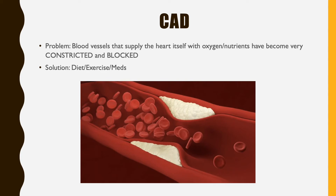For coronary artery disease, we tell patients the same things: diet, exercise, and medications. We want to improve their heart health diet, getting some of those fats decreased, and making sure they eat a low sodium diet so they're not holding extra volume — because that extra volume is so much harder for the heart to pump out through all those narrow vessels. Medications are going to include things to decrease cholesterol and decrease blood pressure so the heart isn't working so hard.